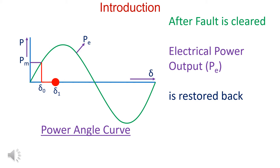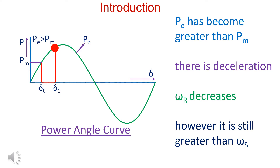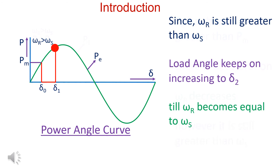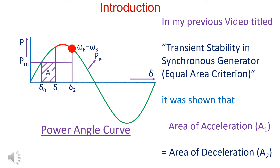After the fault clears, electrical output power is restored. Since Pm is greater than Pe, there is deceleration and omega_r starts decreasing. However, omega_r is still greater than omega_s, so the load angle keeps increasing until omega_r equals omega_s, where the area of acceleration equals the area of deceleration. Energy stored during acceleration is released during deceleration.